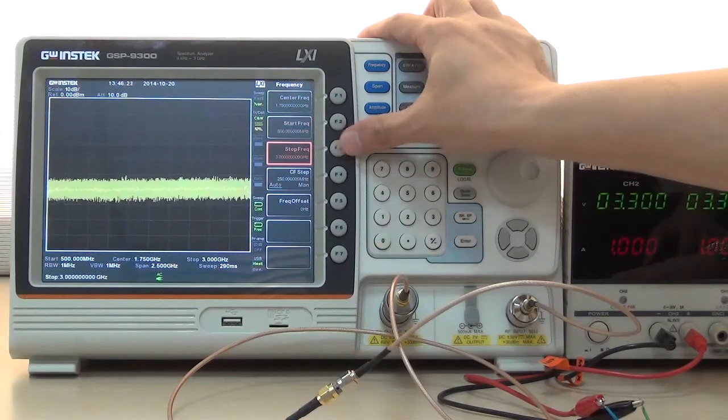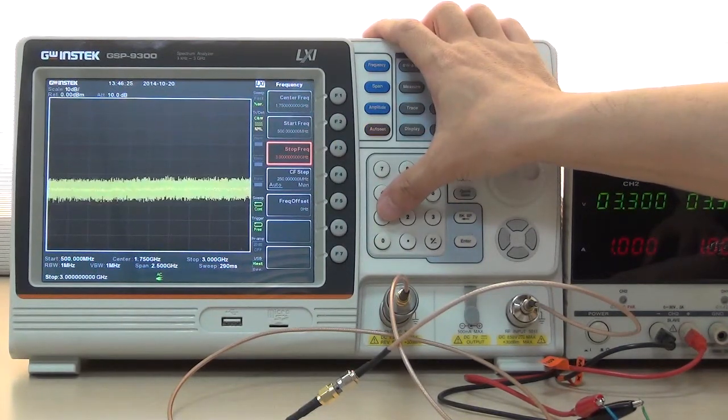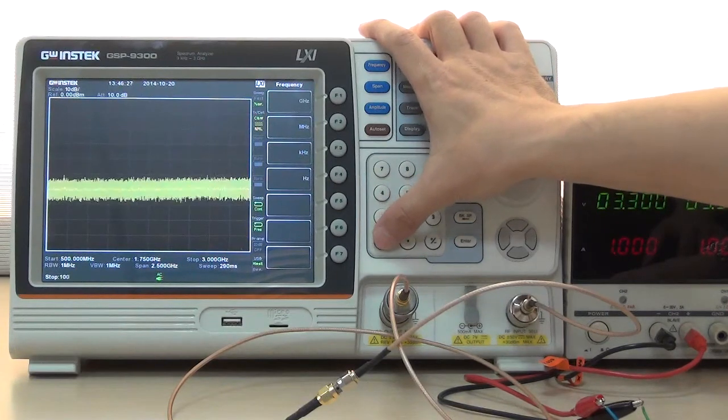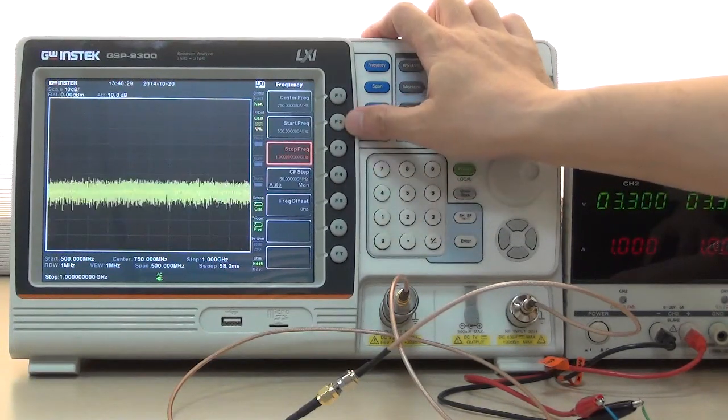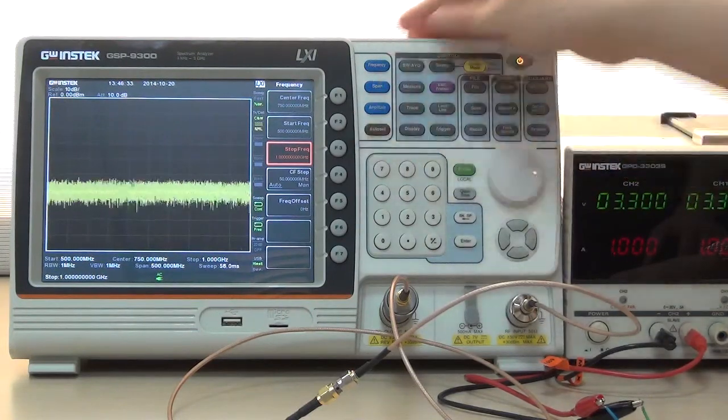Next, select F3 Stop Frequency and input 1000 MHz to set Stop Frequency as 1000 MHz.